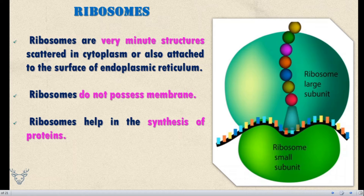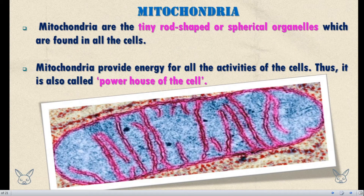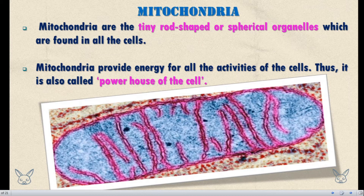Next, Mitochondria. Mitochondria are tiny rod-shaped or spherical organs which are found in all cells — plant cells, animal cells, all cells. Mitochondria provides energy for all the activities of the cell. It is called the powerhouse of the cell.